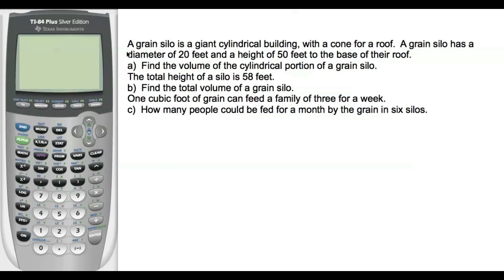Okay, in this example we're talking about a grain silo, which is a giant cylindrical building with a cone for a roof. A grain silo has a diameter of 20 feet and a height of 50 feet to the base of this cone roof. So, key dimensions here: grain silo diameter of 20 feet, it's a giant cylindrical building, and a height of 50 to the base of the roof, so the cylinder part is a height of 50.